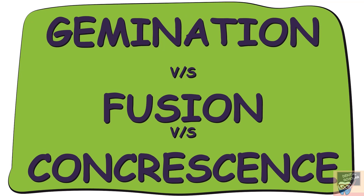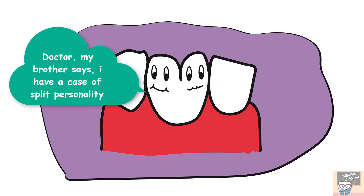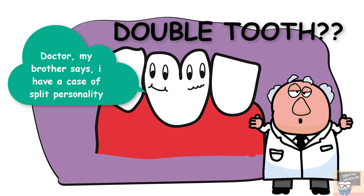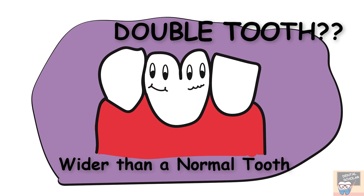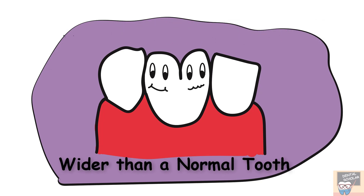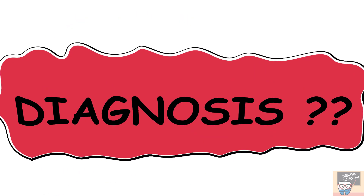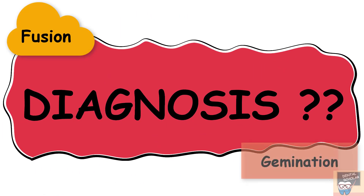So let's begin with the question of the last video. What do we diagnose this tooth as? This tooth can be diagnosed as a double tooth. The double tooth is any tooth that is wider than a normal tooth and it is either a result of fusion or of partial gemination. So how do we diagnose whether it is a result of fusion or of partial gemination?